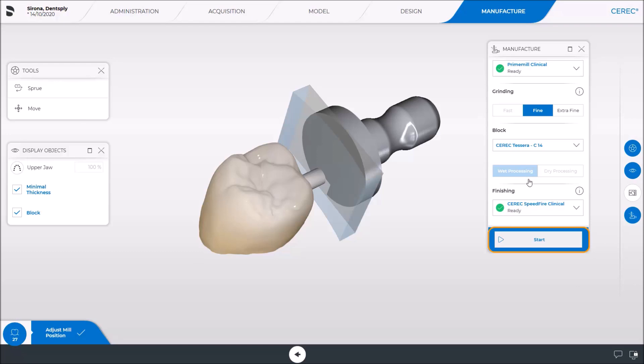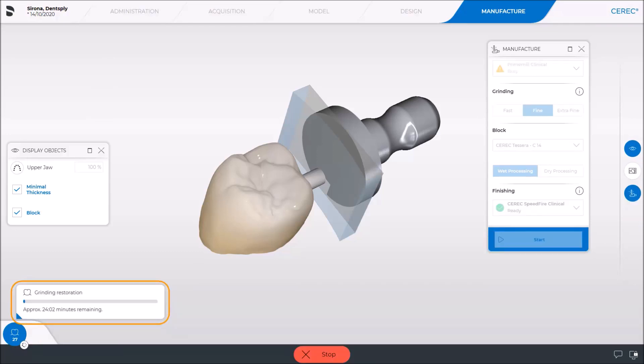Once we tap Start, the estimated remaining process time is displayed at the bottom left of the screen. This varies depending on the type and size of the restoration, as well as the selected grinding mode. Both fast and fine grinding modes are available.